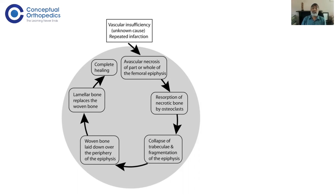Whatever causes vascular insufficiency leads to avascular necrosis, then necrotic bone is absorbed by osteoclasts, followed by collapse and fragmentation of the epiphysis. Then bone formation and re-ossification occur, eventually leading to healing and remodeling. This whole process is quite long — not days or weeks, but months. The first stage may take six to eight months, the second stage eight to twelve months, the third stage two to three years, and remodeling can continue for years.